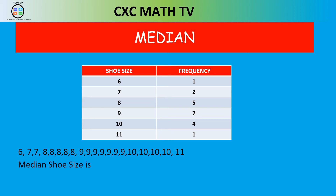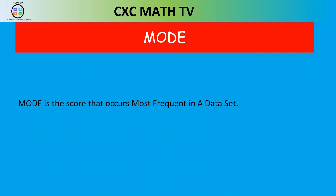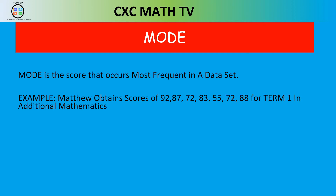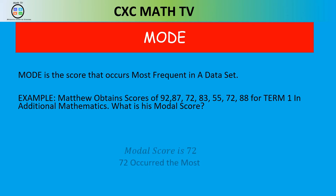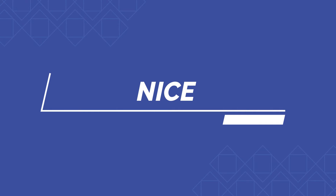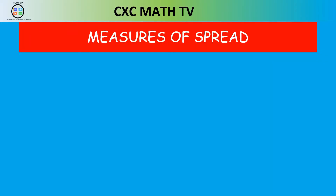Finally, the mode is the score that occurs most frequently in a data set. Looking at Matthew's scores, we can clearly see that 72 occurred twice — more than any other score. So Matthew's mode is 72. Now let's move on to measures of spread.